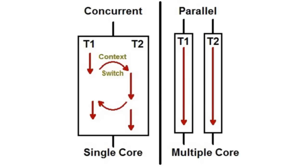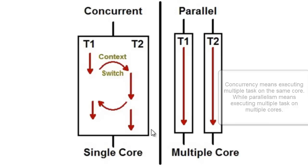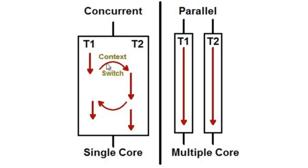Concurrency means executing multiple tasks on the same core, while Parallelism means executing multiple tasks on multiple hardware — multiple cores, multiple machines, or whatever. In Concurrency we have two tasks, T1 and T2, but they execute on the same core. We can see in this image we have one core and two tasks T1 and T2.